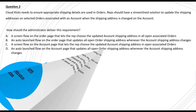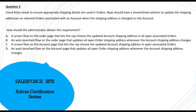The next question: CloudKick needs to ensure appropriate shipping details are used in orders. Reps should have a streamlined solution to update the shipping address on selected orders associated with an account when the shipping address is changed on the account. Option A is a screen flow on the order page that lets reps choose the updated account shipping address in all open associated orders — this doesn't make sense because the change happens on the account.